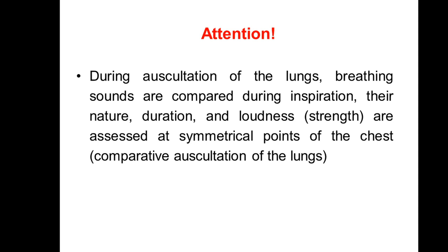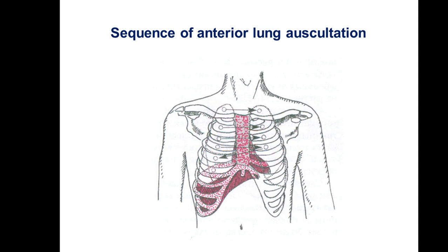During auscultation of the lungs, breathing sounds are compared during inspiration. Their nature, duration, and loudness are assessed at symmetrical points of the chest — that is why we call this comparative auscultation of the lungs. If you remember comparative percussion of the lungs, we use the same points for auscultation. Always we should keep the same sequence of auscultation as in percussion: starting from the anterior area, going to the lateral part, and then to the back.